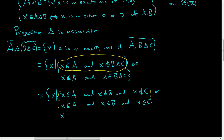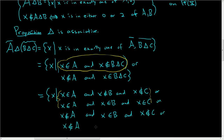Now let's look at the second line. X is not in A. What does it mean to be in the symmetric difference? It means it's in exactly one of B, C. The case first where it's in B and it's not in C. Or then again X is not in A, and the case where it's not in B and it is in C — so it's in exactly one of B, C.